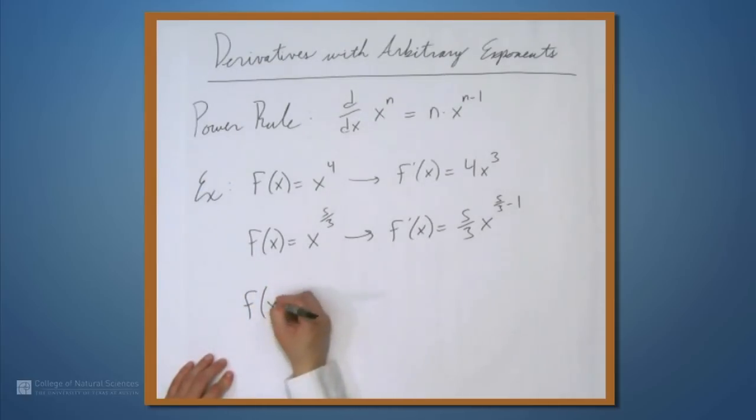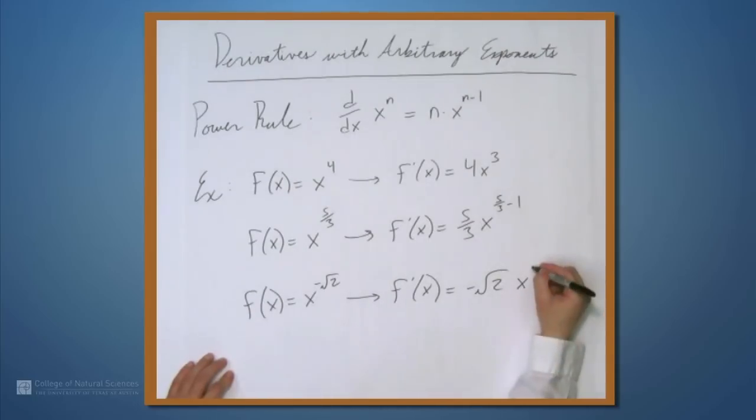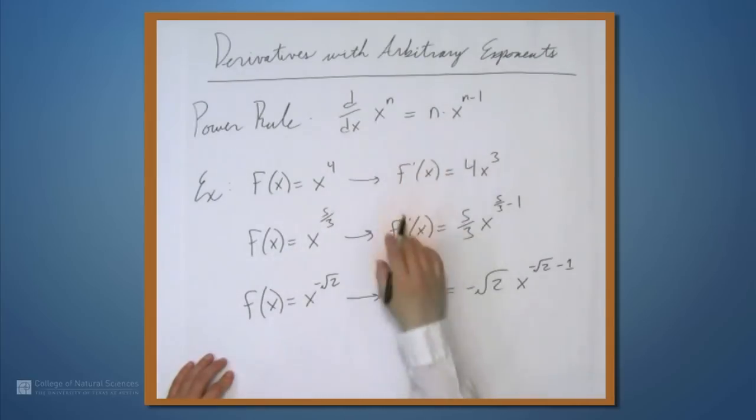Let's say f(x) equals x to the negative square root of 2. Then f'(x) is negative square root of 2 times x raised to the power negative square root of 2 minus 1. So this formula holds for all of these examples.